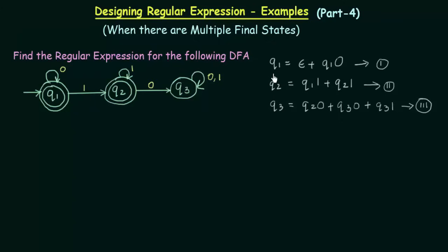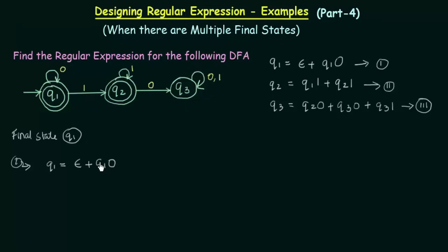Now we have made equations for all the states. Since q1 and q2 are both final states, let us take one final state at a time and find the regular expression for it. Let me start with final state q1. I will take equation number 1: q1 = ε + q1·0. This equation is of the form r = q + r·p, where q1 is r, ε is q, and 0 is p.